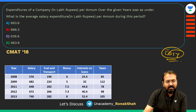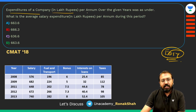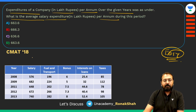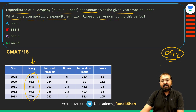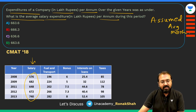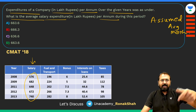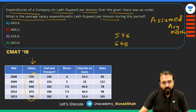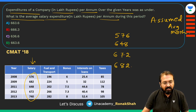Now a slightly easier question: expenditure of a company in rupees lakhs per annum over given years is provided — what is the average salary expenditure per annum during the given period? We can use the assumed average method. Write down the values: 576, 648, 672, 682, and 740. Assume an average of 650 and compare each value to it.